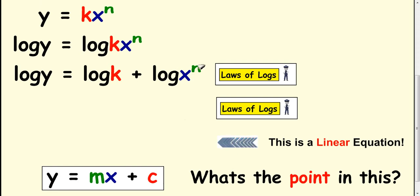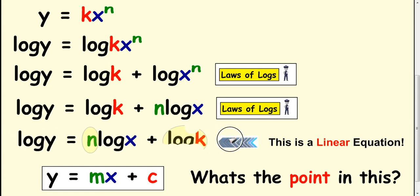The next log law you can use is you can take your power down to the front. So, we rewrite it like this. And then we just switch these two about. So, this is your gradient, the n, and this here is your intercept. So, we have this in the format of y equals mx plus c, albeit we've got logs in the way. But it's still the format of y equals mx plus c.